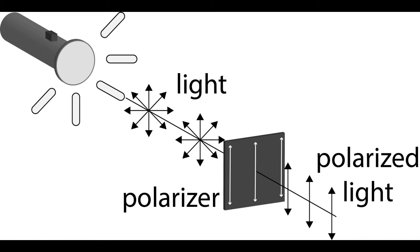This is called unpolarized light. But we can use something called a polarizer or polarized filter to only let one direction of the oscillation through, or essentially, polarize the light.